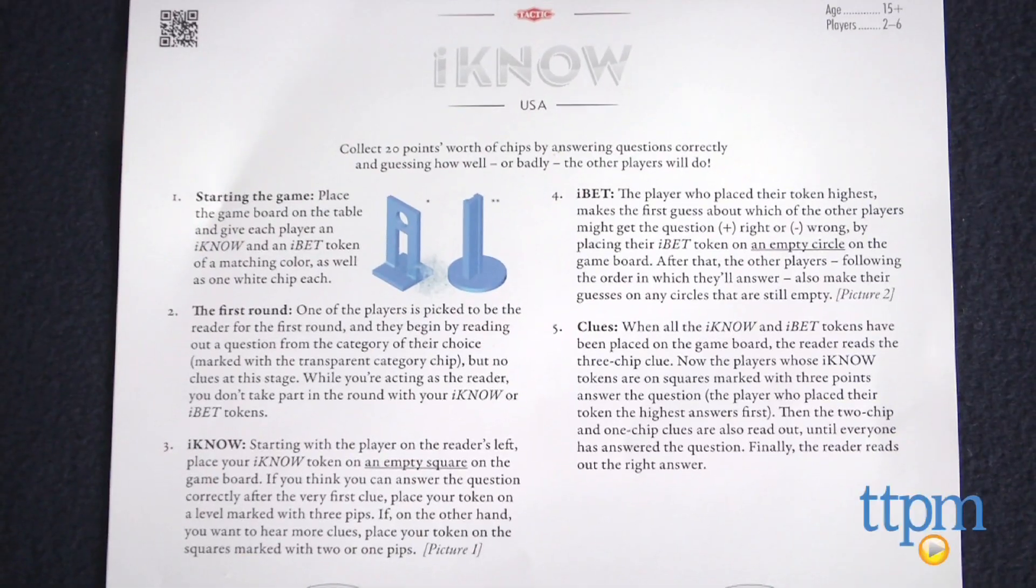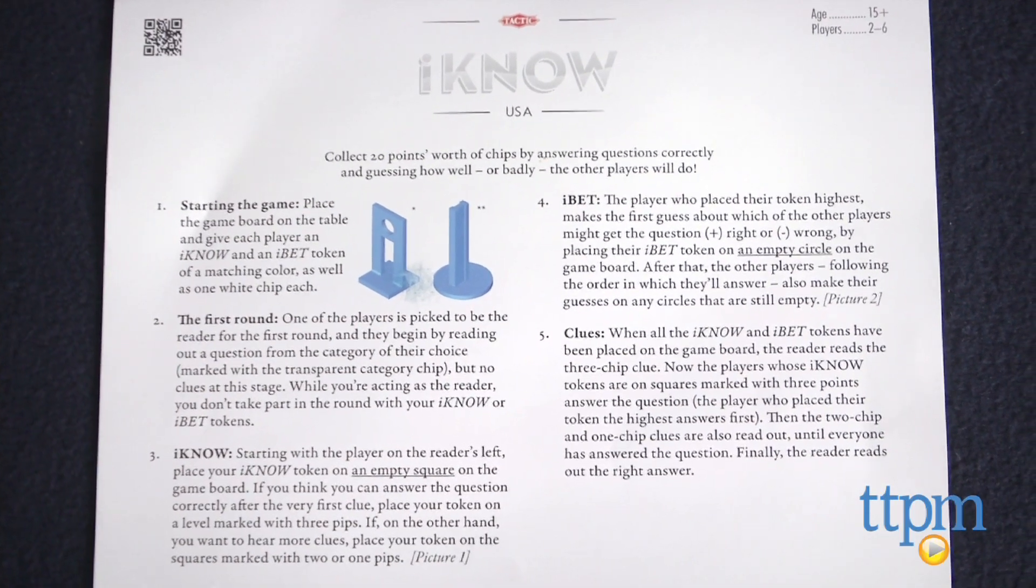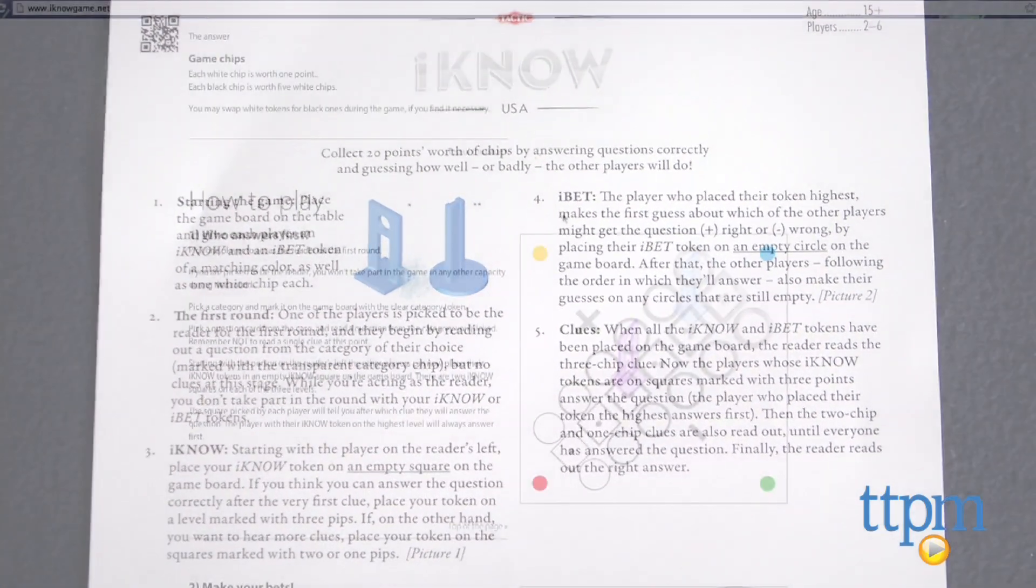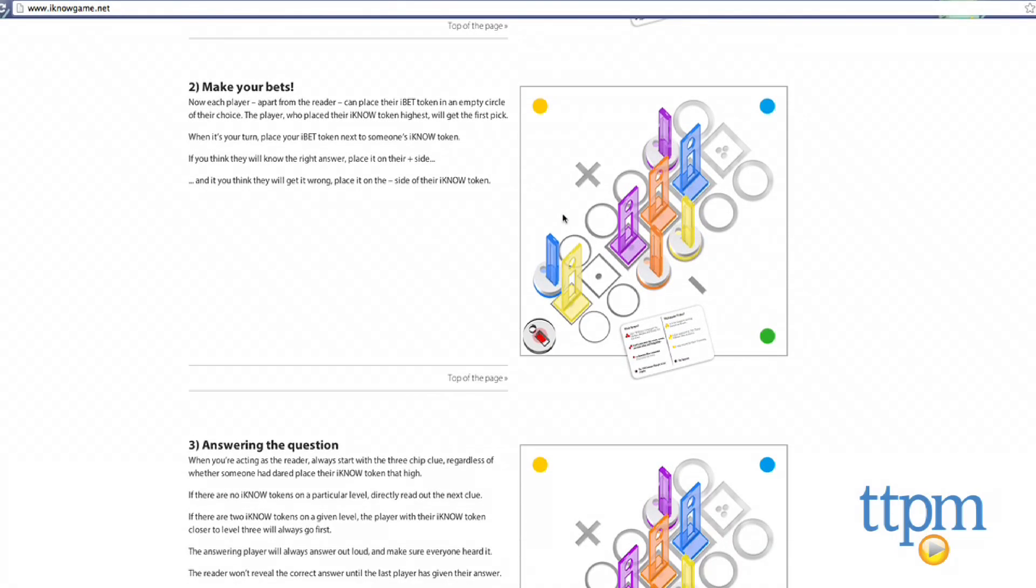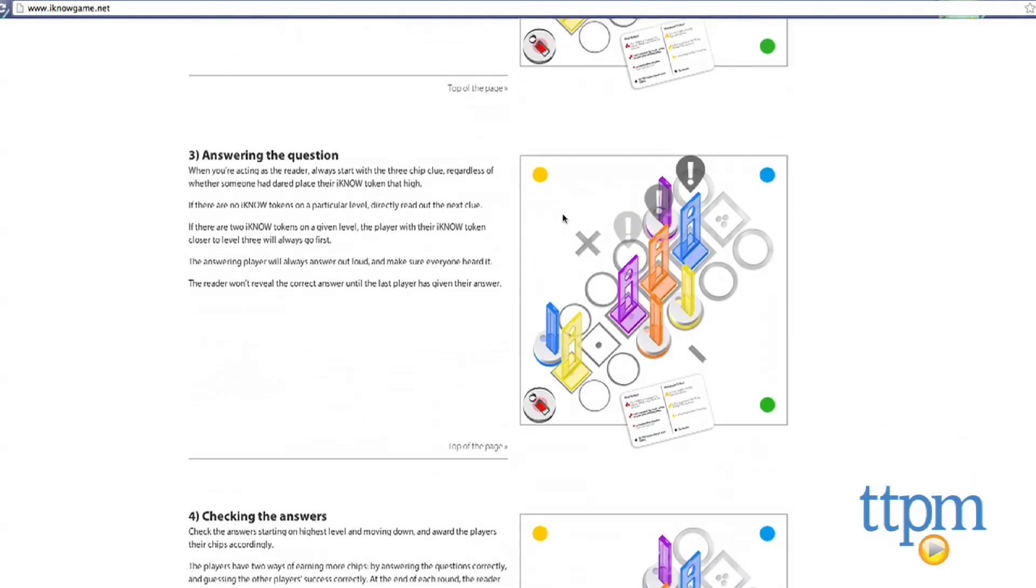But here's where the problems start. First, the instructions that come in the box are not clear, as in really baffling. We had to go to the game's website to figure out how to play. We have no idea why the instructions in the box aren't the same as on the website, but go figure.